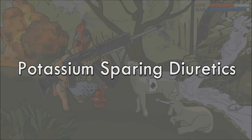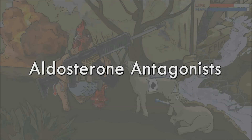Another class are the potassium-sparing diuretics. As the name suggests, the overall effect of these diuretics is that it spares the potassium from being excreted and keeps it in the body. Within this class of diuretics, there are two subtypes that act in different places. The first are aldosterone antagonists.